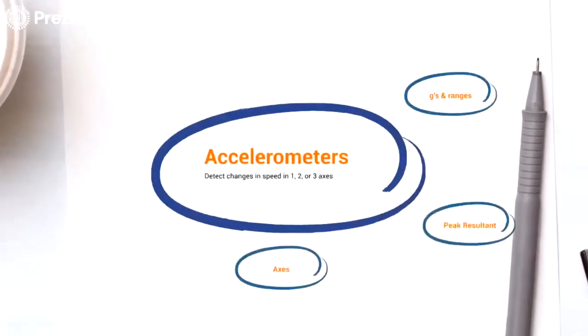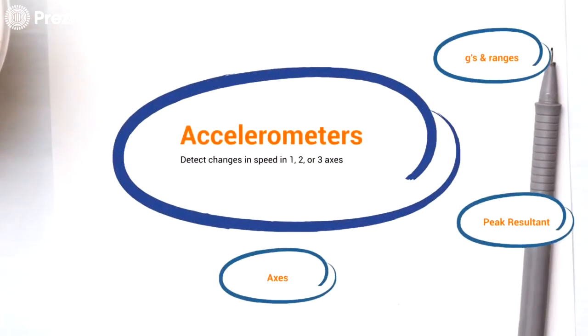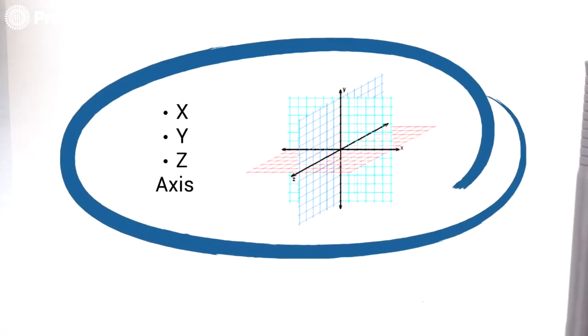So what is an accelerometer? Accelerometers can detect changes in speed in one, two or three axes. Let's focus on the three axis or tri-axle accelerometer and what they are. They can detect changes in three dimensions. But what are these axes? These axes are known as the X, Y and Z axis and they relate to movement forward and backwards, up and down, as well as left and right.